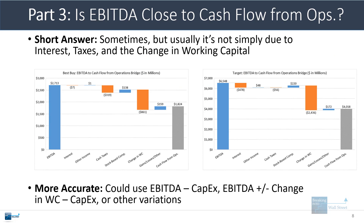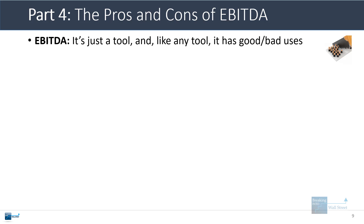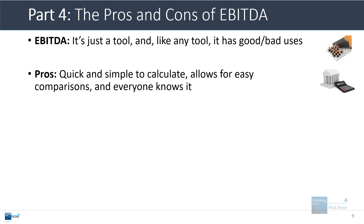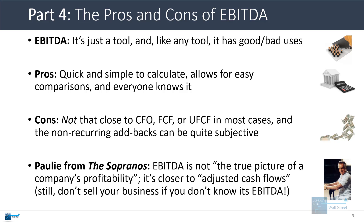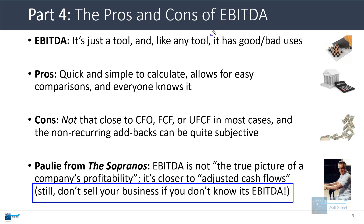So there are ways to deal with this if you want something that better approximates cash flow. Now let's talk about the pros and cons of EBITDA. As I said before, it really is just a tool, and so like any tool there are good uses and bad uses. The pros are that it is quick and simple to calculate, it lets you make quick and easy comparisons between different companies, and everyone in finance knows it. The cons are that it is not that close to cash flow from operations, free cash flow, or unlevered free cash flow in most cases. Also, this concept of adding back non-recurring expenses can be quite subjective and people often disagree about what exactly to add back. Going back to that quote from The Sopranos — EBITDA is not the true picture of a company's profitability. I would say it is closer to the adjusted cash flows or maybe adjusted normalized cash flows of a company. Paulie is not quite correct, but they are correct about one other thing: you really should not sell your business if you don't even know what its EBITDA is.